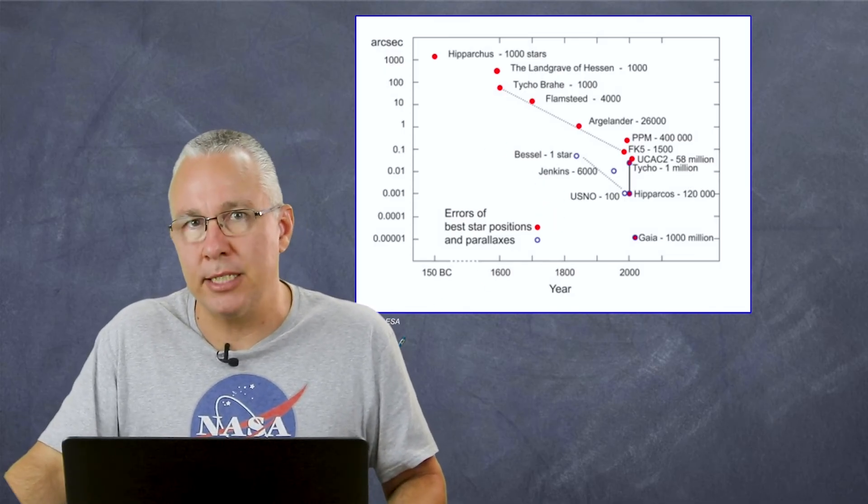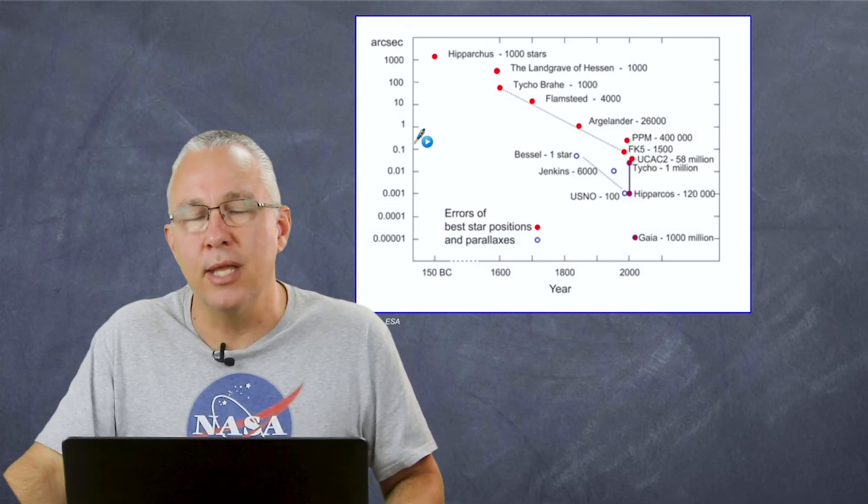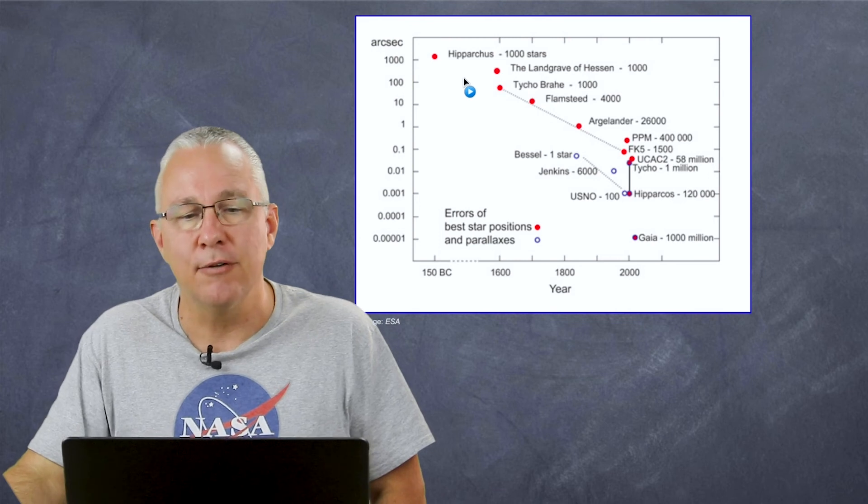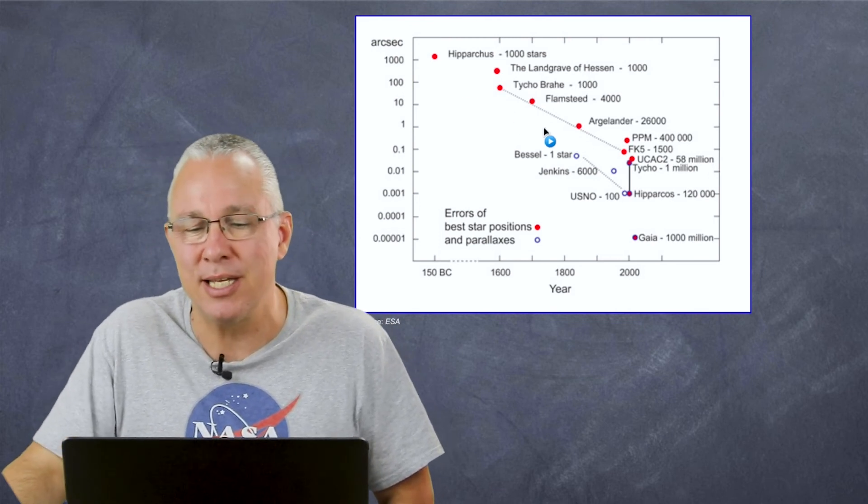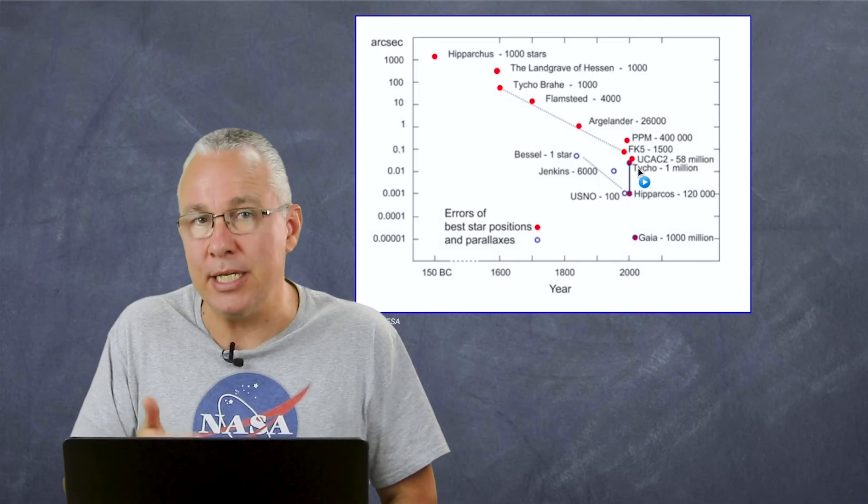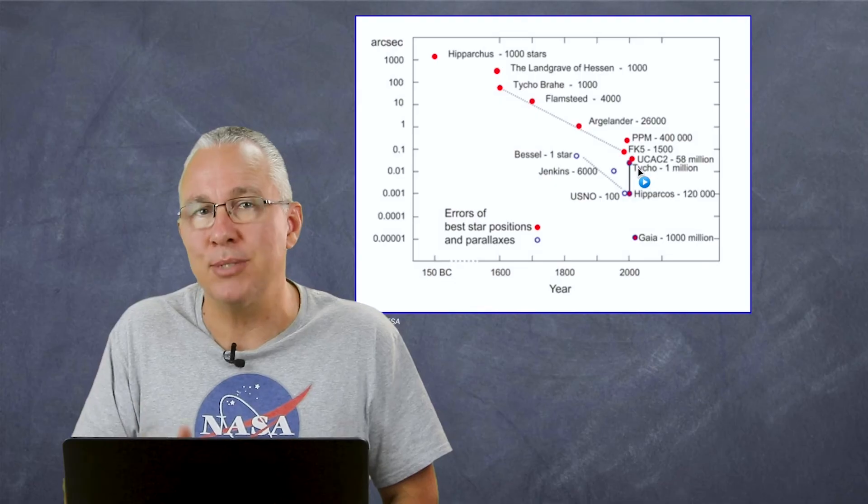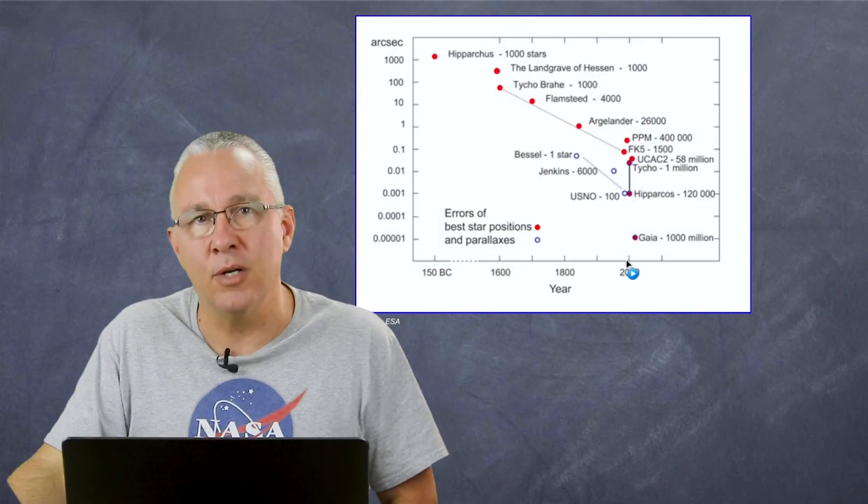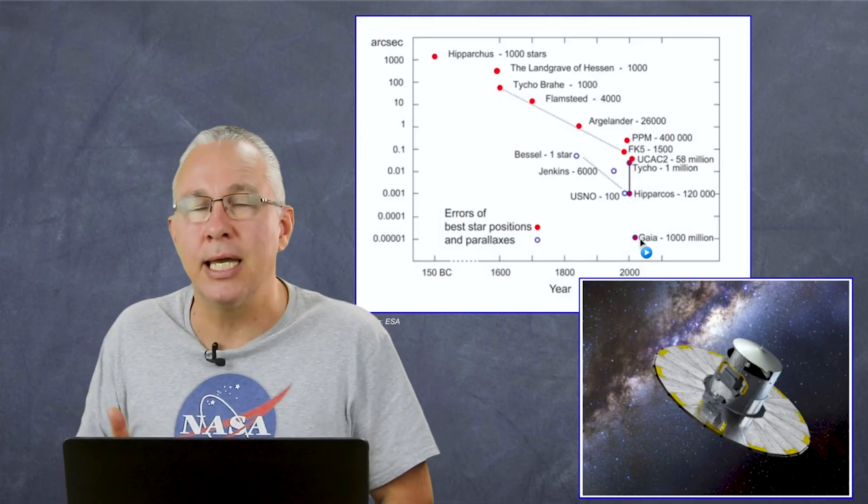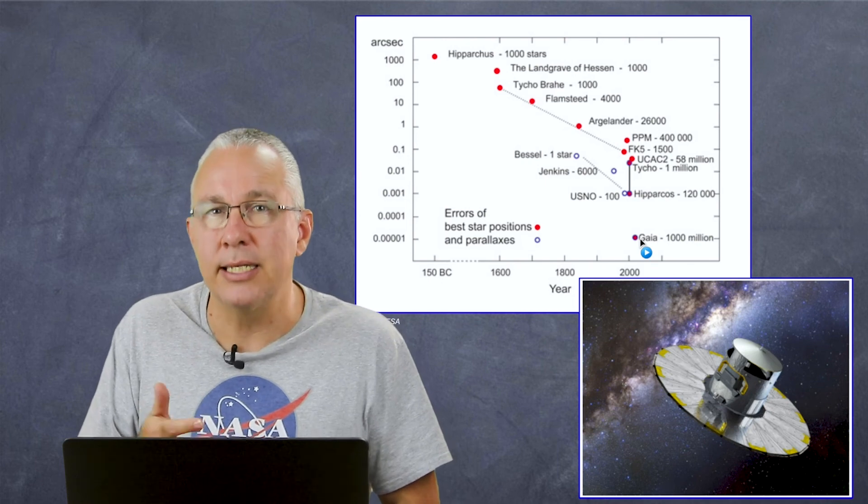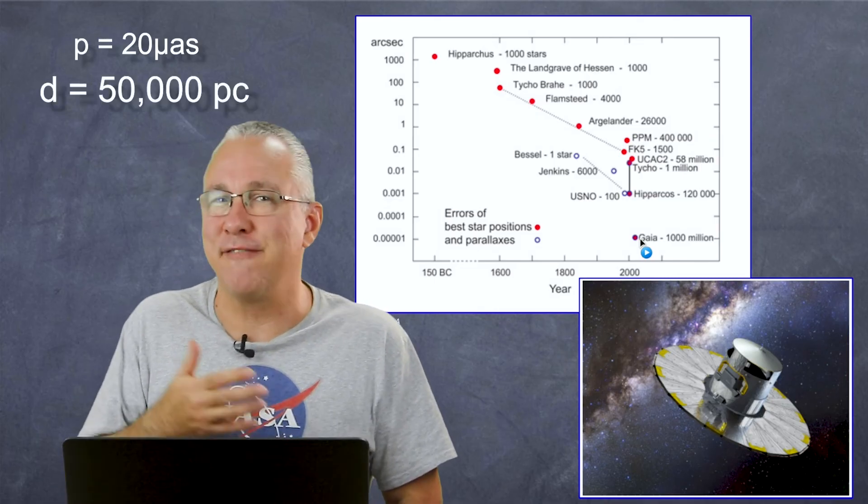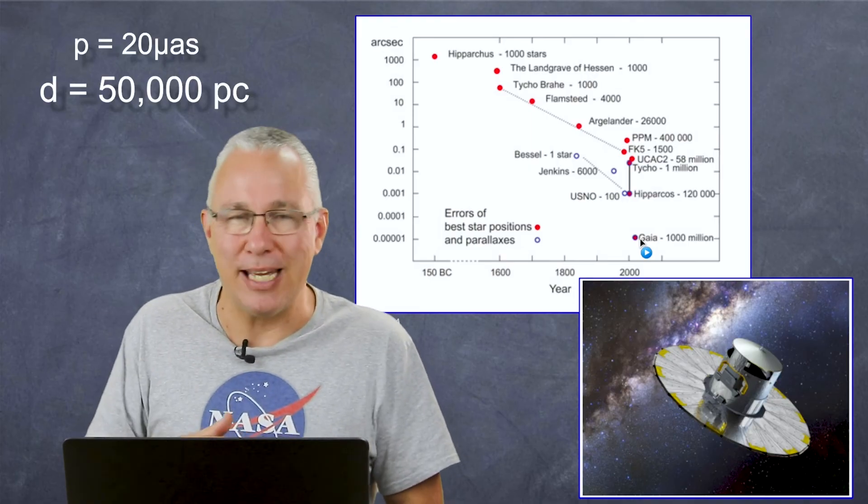But things have changed. This particular image here, which was produced by ESA, the European Space Agency, shows you the actual ability to measure the angles with respect to historical time. As you can see, it has improved considerably from, let's say, 150 BC with Hipparchus's measurements down to more recent times. That is ultimately due to improved precision, but it also is due to the fact that now we have the ability to put telescopes into space so we can avoid the Earth's atmospheric interference. I want to particularly concentrate on the latest telescope that has been put up, and that is Gaia. Gaia, put up by the European Space Agency, has the ability to measure stellar parallax down to 20 microseconds. That means measuring distances up to 50,000 parsecs. That is a vast improvement to the 100 parsecs that I was taught way back in the early 90s.